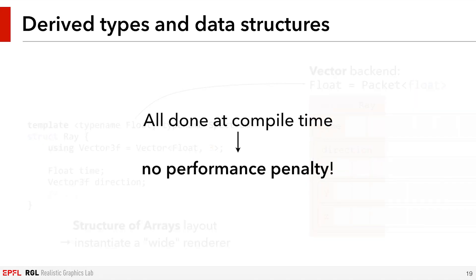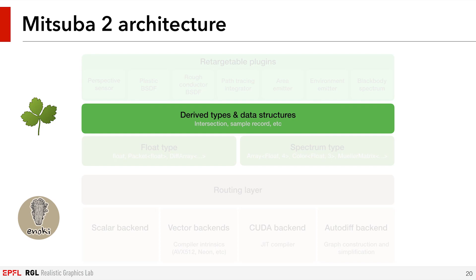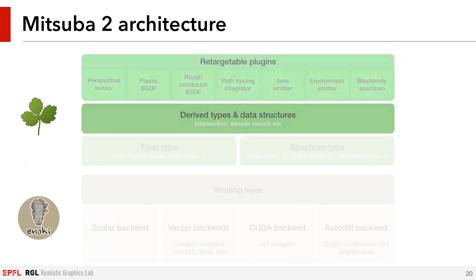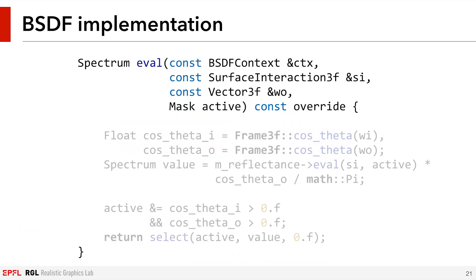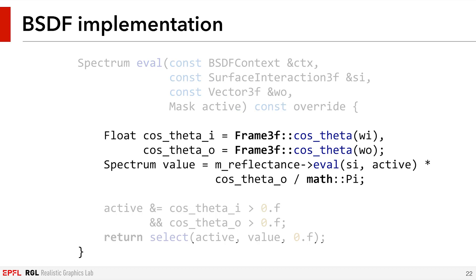An important thing to note is that all of these transformations are performed at compile time, which means that we don't pay a runtime cost for this generality. Once all of the important data structures are defined, we are able to write rendering algorithms, BSDFs, emitters, and so on, all still parameterized by the float and spectrum types. When implementing plugins, the correct derived types are automatically imported, which means that the resulting code is almost identical to standard C++ code. With that single implementation, we can target spectral rendering, vectorized rendering, differentiable rendering, and so on.